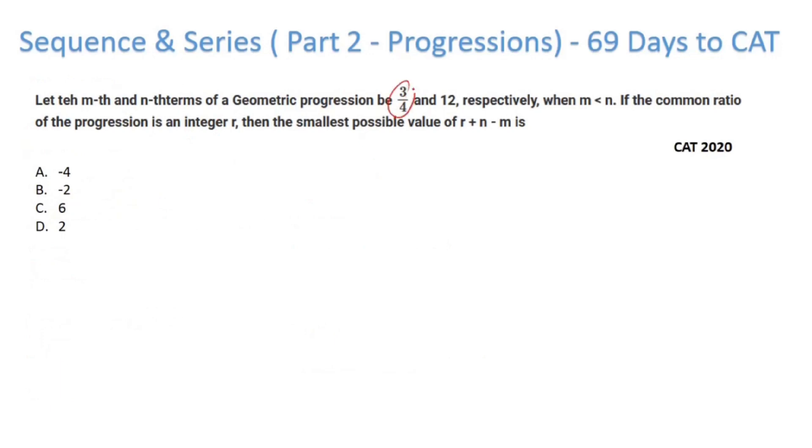The mth and nth term of a GP are 3/4 and 12. If you see, mth term I can represent as a·r^(m-1) that is 3/4, and nth term is a·r^(n-1) that is given as 12. Now just divide it: r^(n-m) becomes 16.